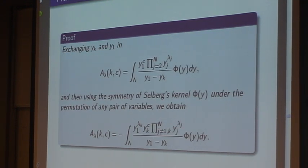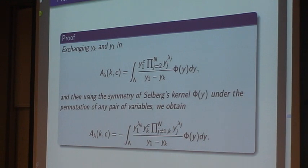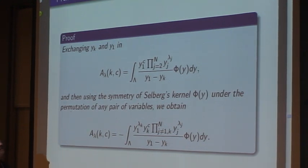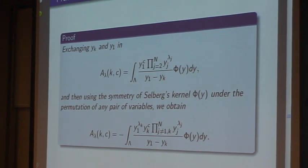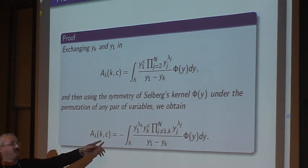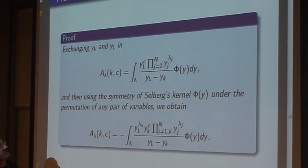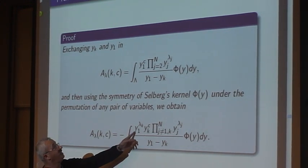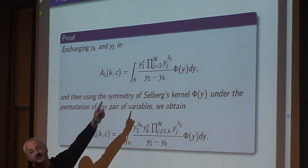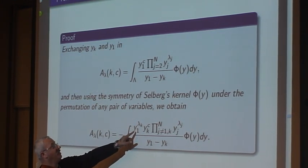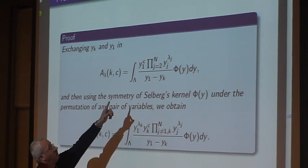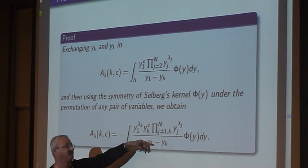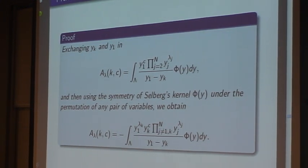The proof is, in fact, it's a part. I will change the variables y_k and y_1 in this integral. Because of the symmetry of this weight φ_λ under any permutation of any pair of variables, we obtain this one. I changed y_1 with y_k. Because that's the minus one, and here we see y_1 appears there, y_1 times λ_1. So it would be y_1 times λ_k, and I restrict the multiplication.